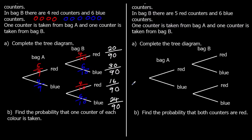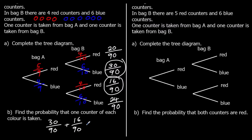So these are all the different possible options, and if we added them up we will see that they add up to one whole — everything that can possibly happen has to add up to one whole. So what was the question? Find the probability that one counter of each colour is taken. So it's either red then blue or blue then red. So it's 30 out of 90 plus 16 out of 90, which is 46 out of 90. We don't have to simplify it unless we're asked to, so I'm going to leave it as 46 out of 90.